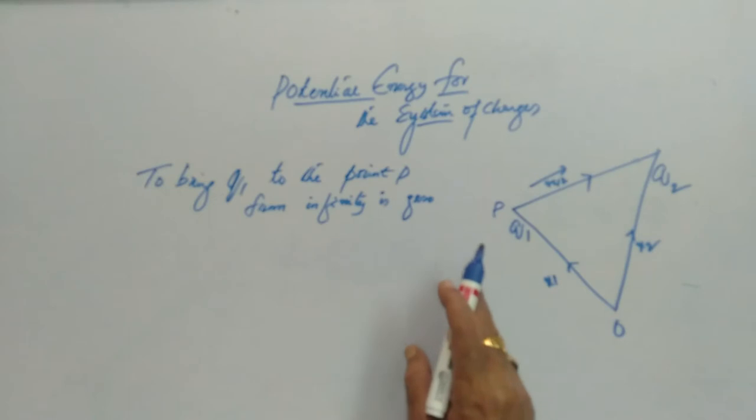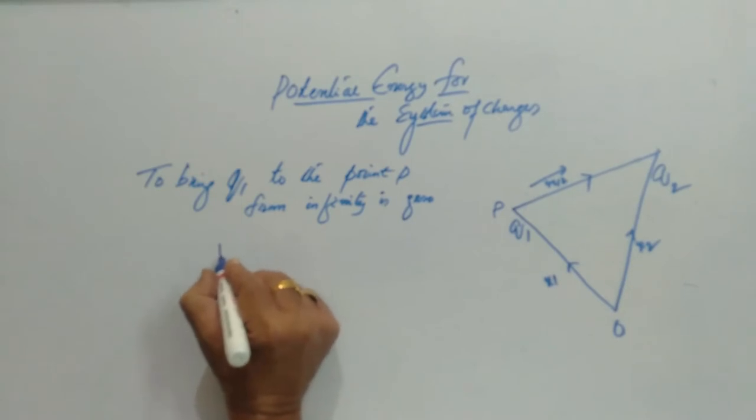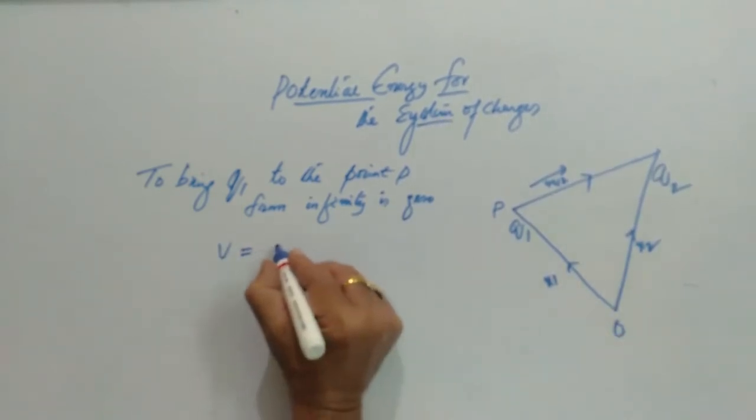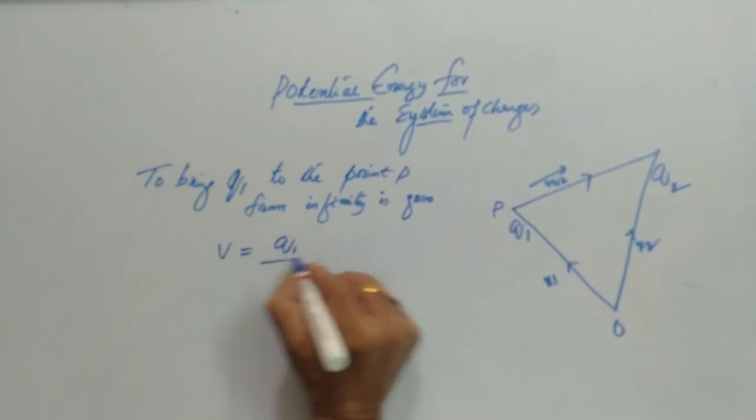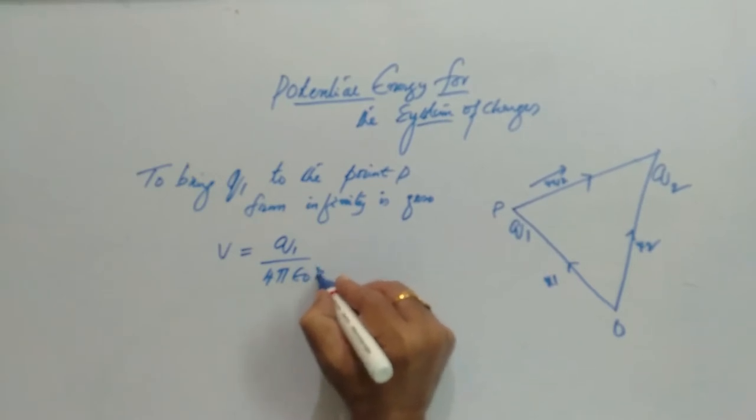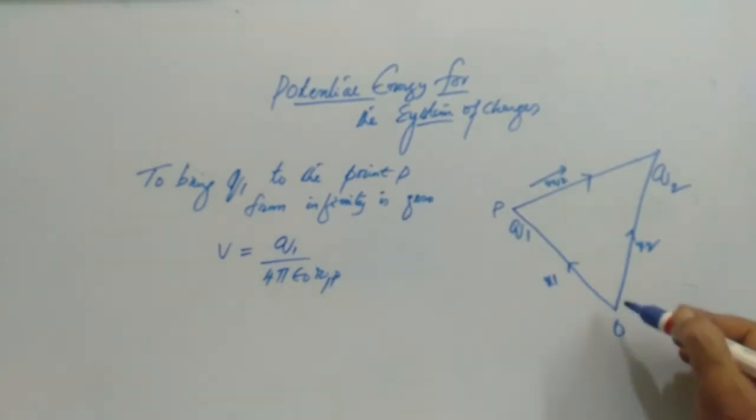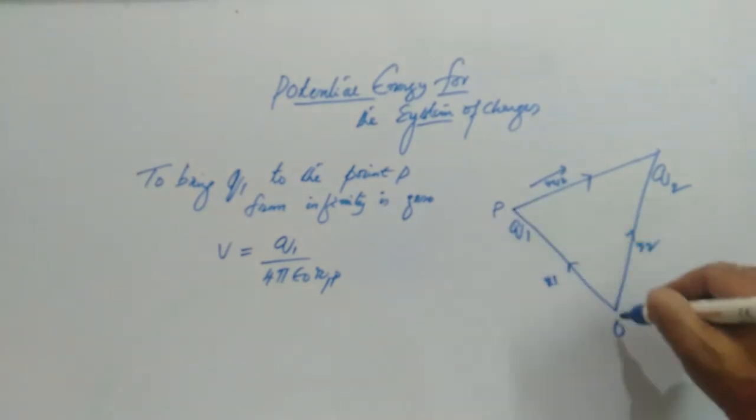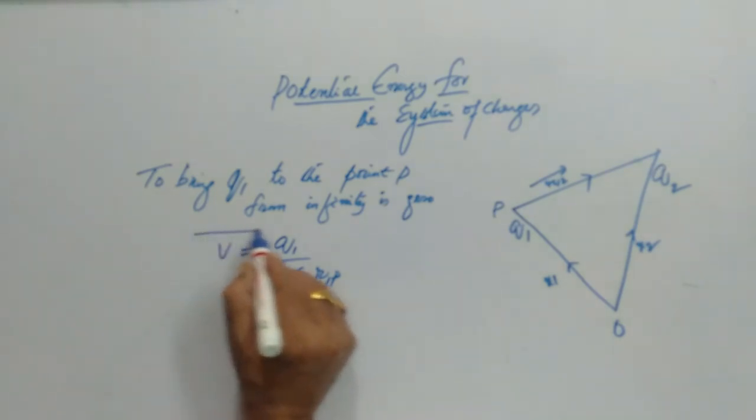But once the point charge Q1 is placed, then it develops a potential. With reference to the origin point, it is Q1 by 4π epsilon naught R1P, where R1P is this vector O to P. So this is the potential developed.